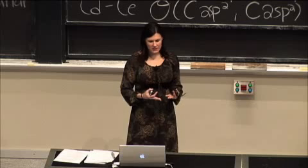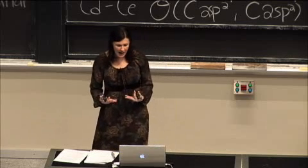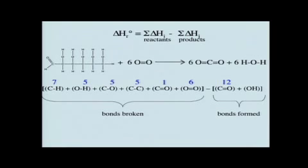If we add up all of the bonds are broken, and we subtract from that the bonds that are formed, those strengths, the C double bond O, we have 12 of those, and how many OH bonds do we have? Right, 12 as well.